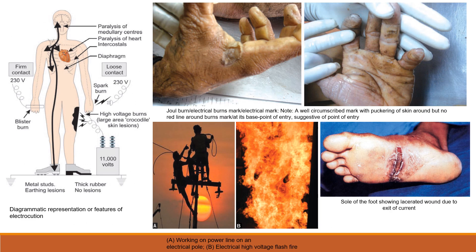With high electric voltage, such as 230 volts, blister burns are seen. Paralysis of medullary centers, paralysis of the heart, intercostal muscles, and diaphragm can occur with loose contact. Spark burns — pointed burns — may also appear. The electrical mark is well-circumscribed with puckering of the skin around it, but no red line. This absence of a red line is an important point indicating the entry site of electricity.